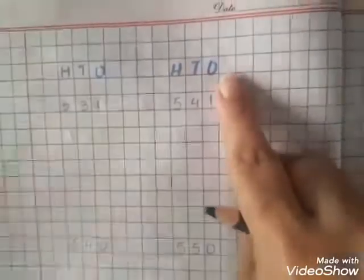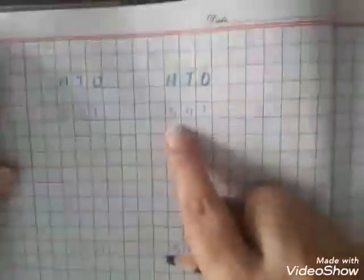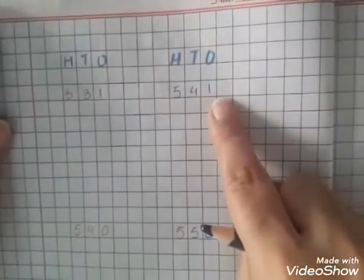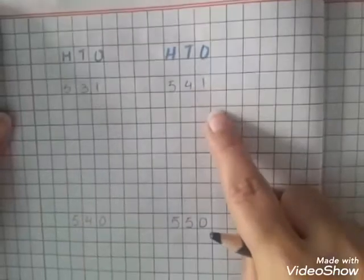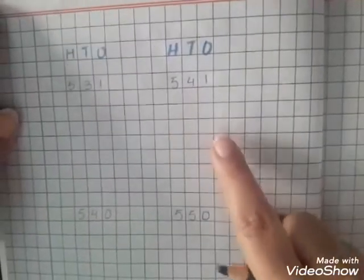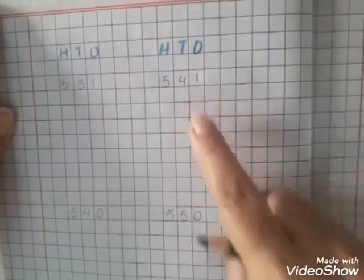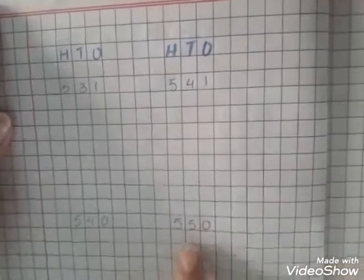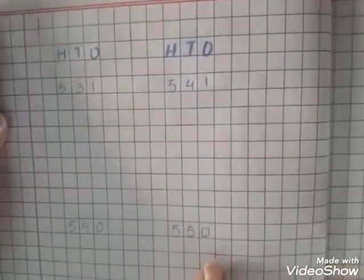Then again you put the heading. Then again it starts: 541, 542, 543, and it ends till 550.